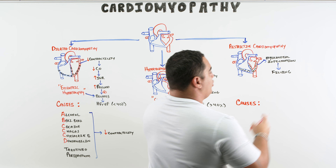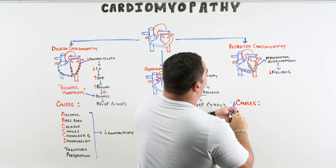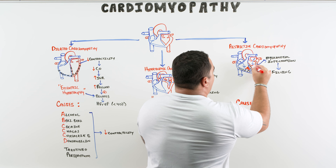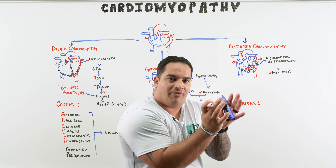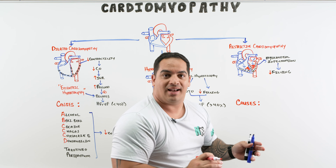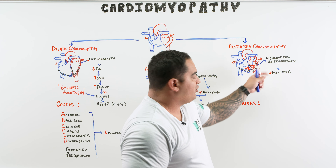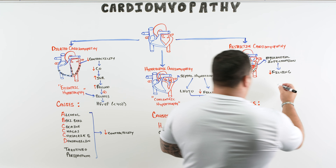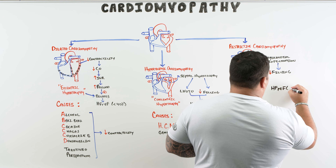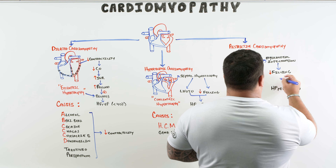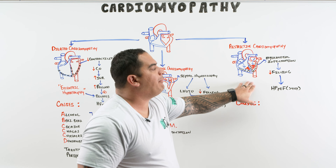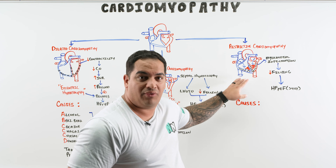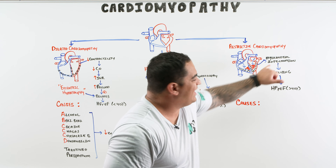This myocardial infiltration reduces the filling process. Blood enters the ventricles but fills relatively quickly and then stops — because the ventricle allows some filling but then doesn't stretch due to the infiltrative process. Contractility is preserved for the most part, but it's very hard to fill, so these patients typically have HFpEF with ejection fraction greater than 40%. There's no hypertrophy — concentric or eccentric — it's purely an infiltrative process.